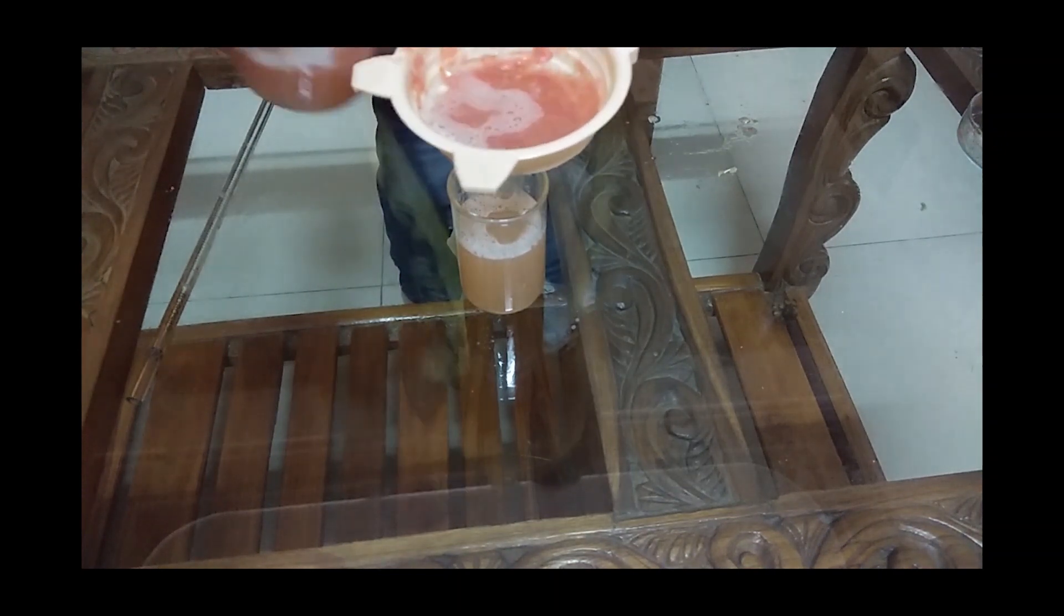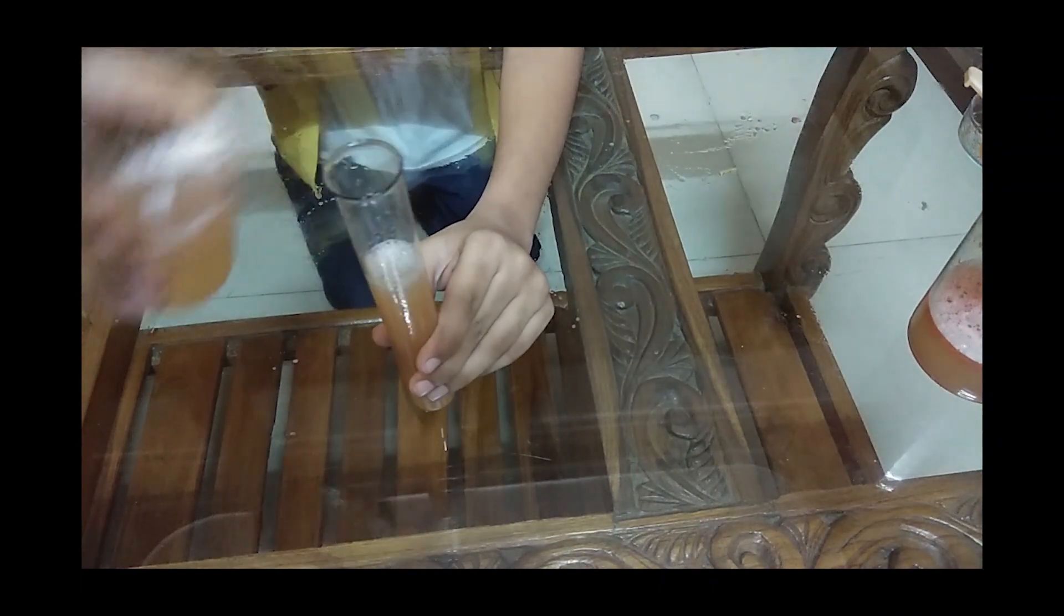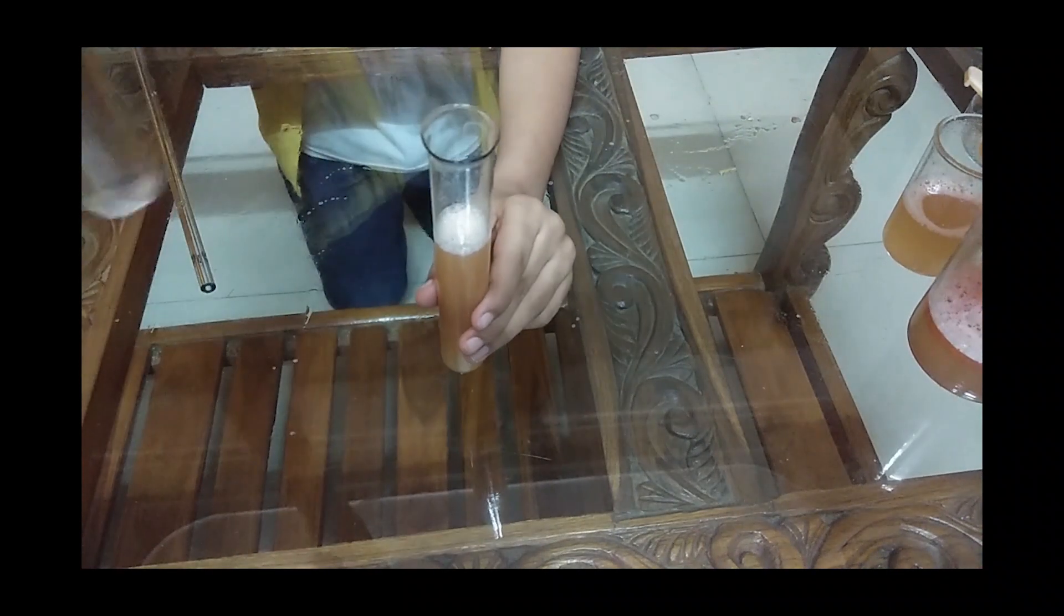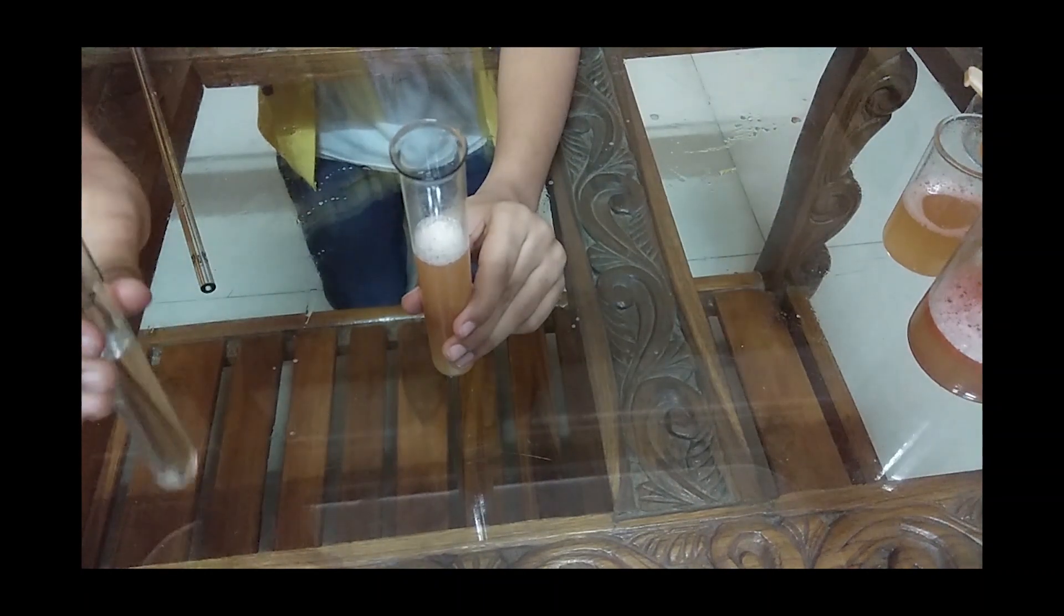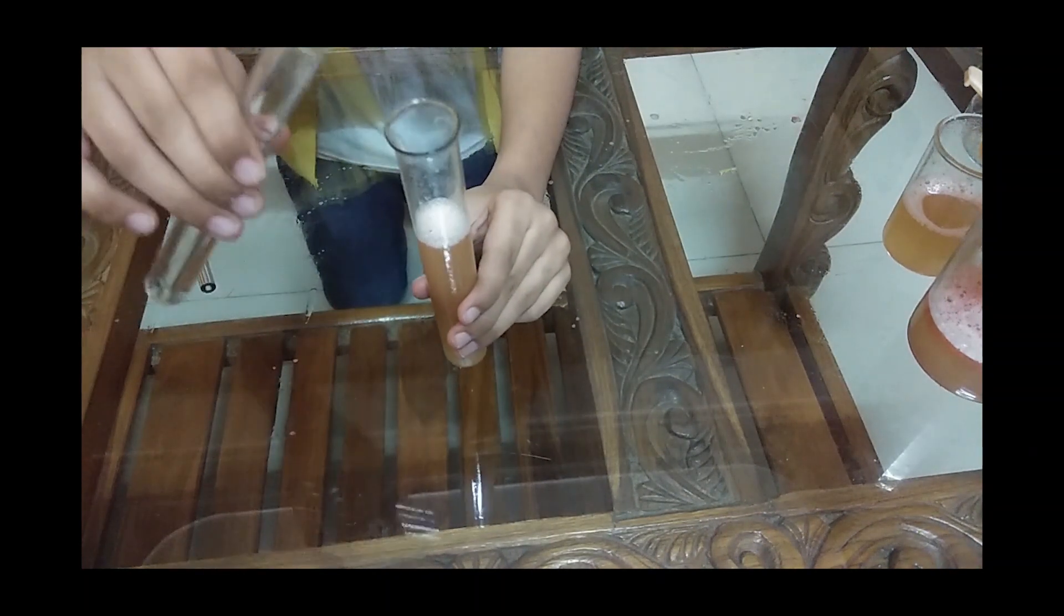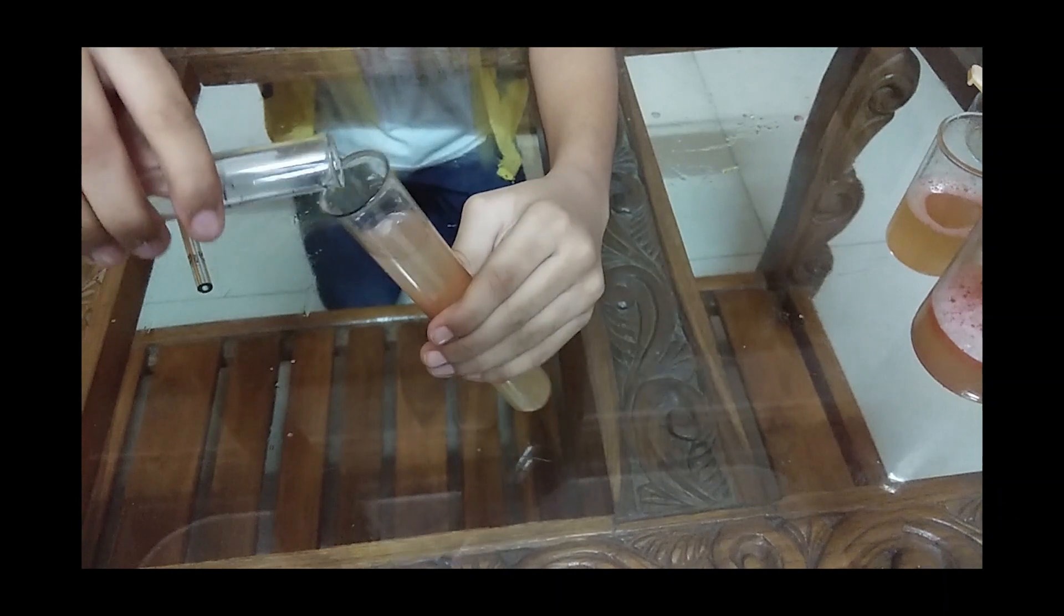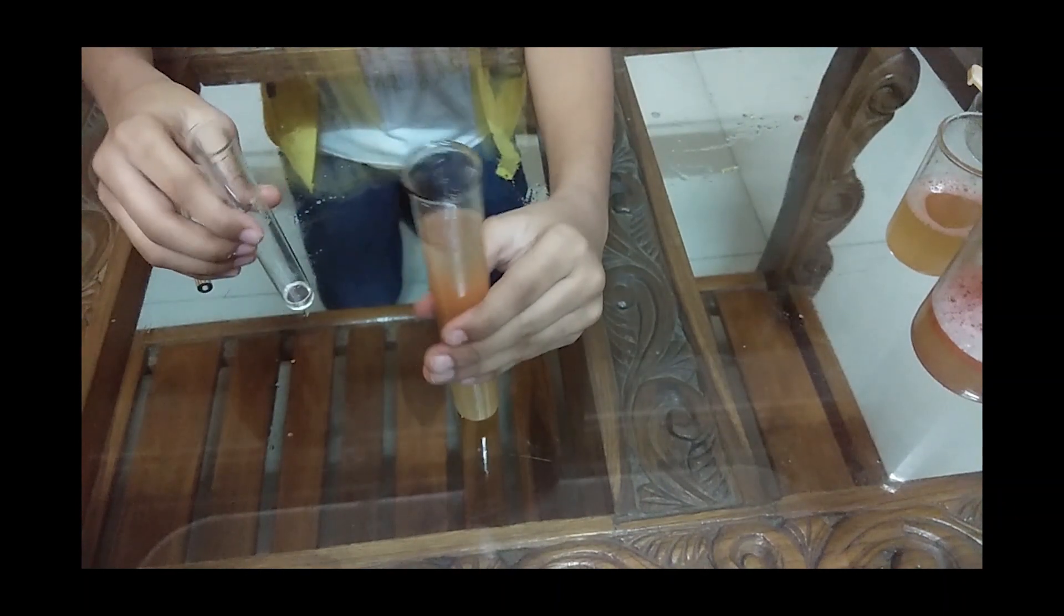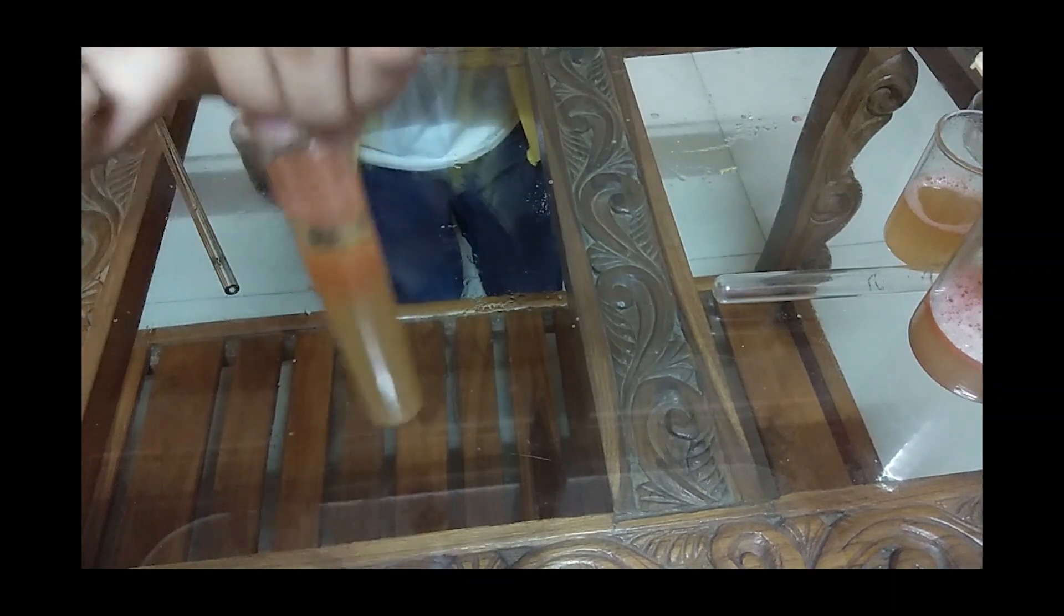That is enough. Now pour this gently into a test tube. This is ethyl alcohol in another tube. You can use surgical spirit from the market, or girls, nail polish remover also contains ethyl alcohol. Now you will pour this very gently from through the inner surface. Ethanol is not soluble - DNA is not soluble in ethanol.